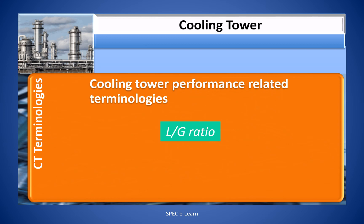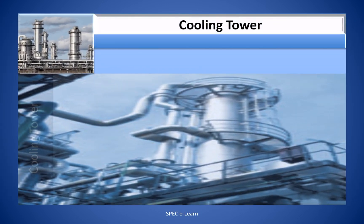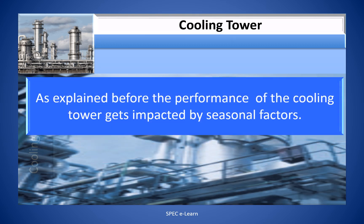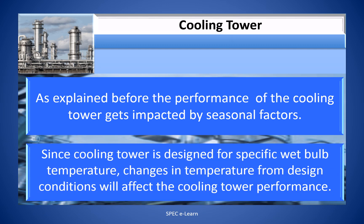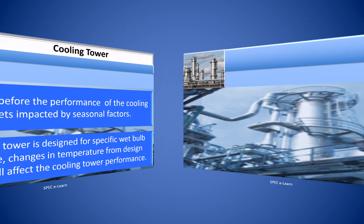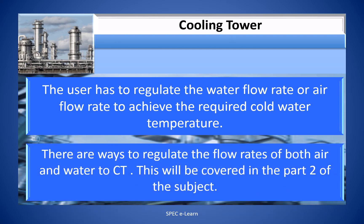L/G ratio is the ratio of the mass of water flow to the mass of air flow to the cooling tower. The performance of the cooling tower is impacted by seasonal factors. Since the cooling tower is designed for a specific wet bulb temperature, changes in temperature from design conditions will affect performance. The user must regulate the water flow rate or air flow rate to achieve the required cold water temperature. Ways to regulate these flow rates will be covered in Part 2.